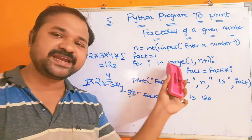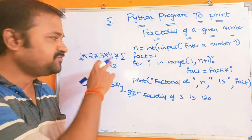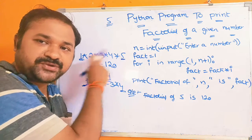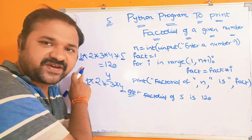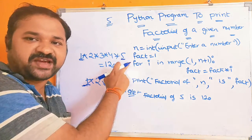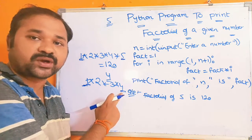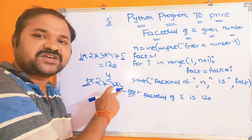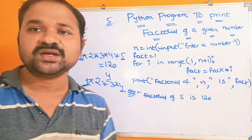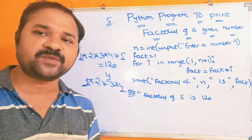Next, we use a for loop. Why? Because to calculate the factorial, if the number is 5, we have to multiply digits from 1 to 5. We know the initial value (1) and the final value (that number), so it is better to use a for loop. We know the syntax of the for loop in Python.